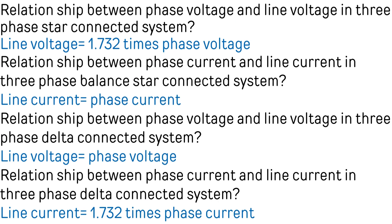What is the relationship between phase voltage and line voltage in a three-phase star connected system? Line voltage equals root three times, or 1.732 times, phase voltage. What is the relationship between phase current and line current in a three-phase balanced star connected system? Line current is equal to phase current. What is the relationship between phase voltage and line voltage in a three-phase delta connected system? Line voltage is equal to phase voltage.